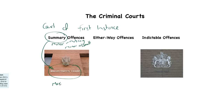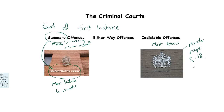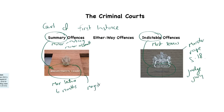Summary offences are only heard in the magistrates court, and the maximum sentence is six months. On the other end of the scale, indictable offences are the most serious — things like murder, rape, and section 18. The court of first instance for an indictable offence is the crown court, so an indictable offence can only be heard in the crown court. As you'll remember from Unit 1, it's in the crown court that we get a judge and jury, and in the magistrates court we get magistrates.